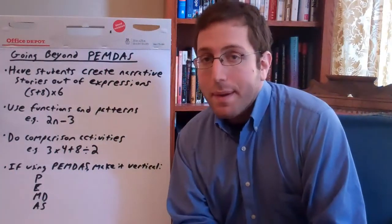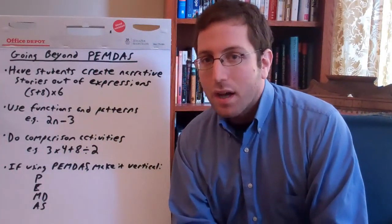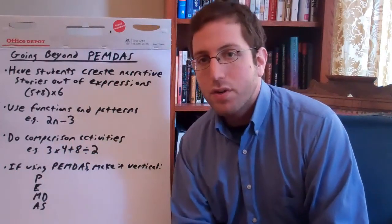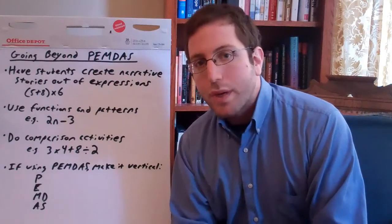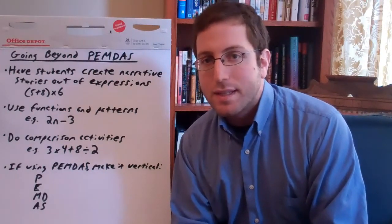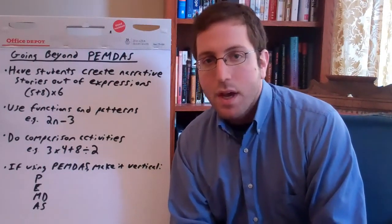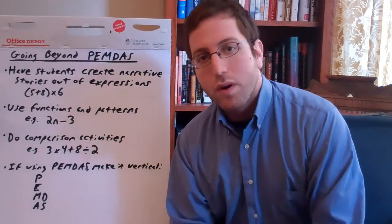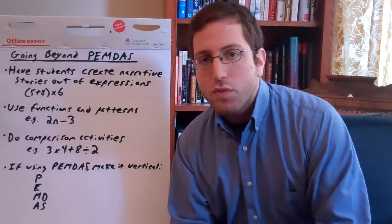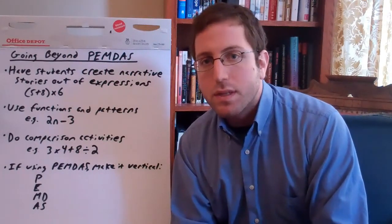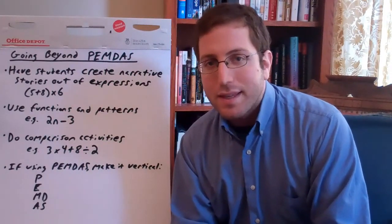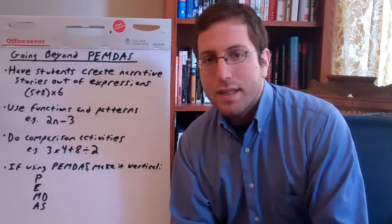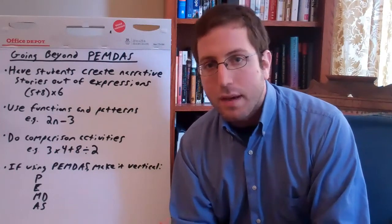Next, just do basic comparison activities. Give students a longer expression, like 3 times 4 plus 8 divided by 2, and have them play around with the order of operations. What happens if you add parentheses in there in various places? What happens if you don't follow the order of operations? What happens if you do? What kind of different numbers do you get? This is really driving home the point to students that the order of operations is not this kind of random rule that doesn't matter. It actually is incredibly important, and it's all about how you manipulate numbers.